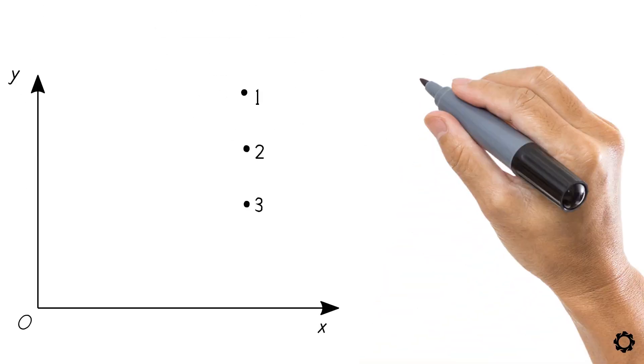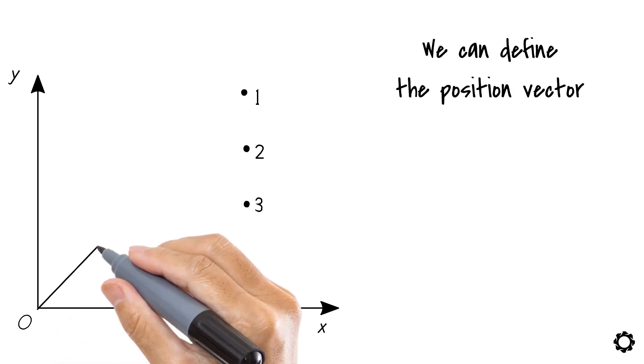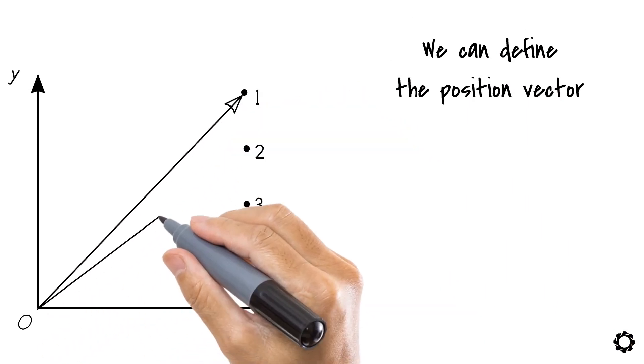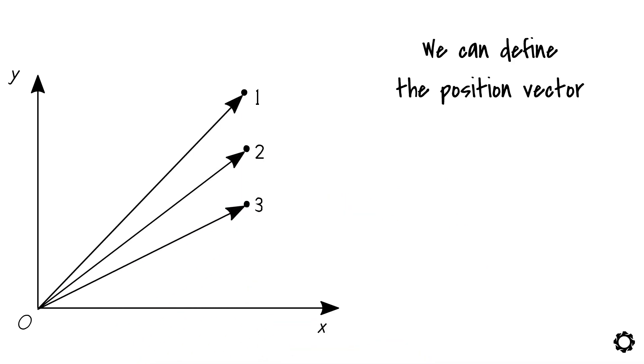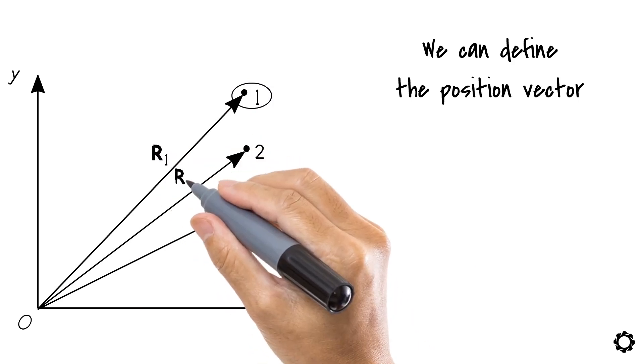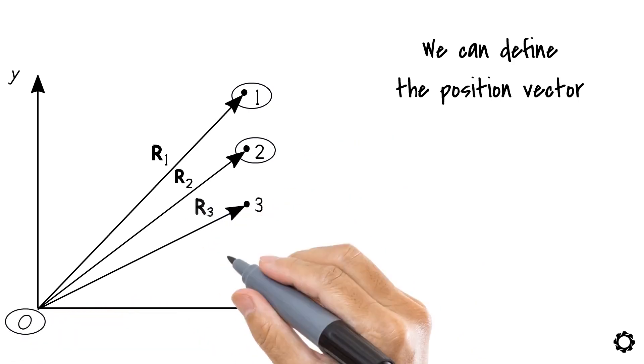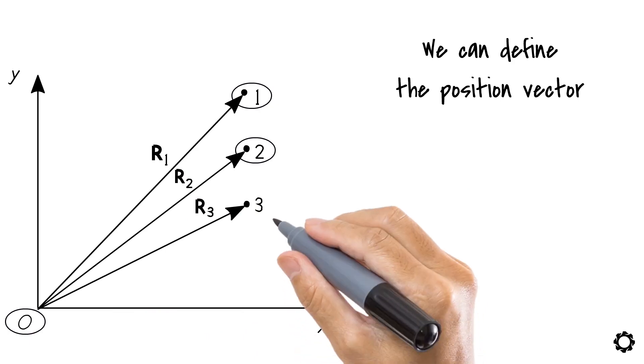If we pick three particles randomly positioned on a plane, we can define the position vector of each one of these particles as the vector that goes from the origin of the fixed or inertial reference system to the particle. That is, for particle 1, this would be the position vector r1. We then have r2, which represents the position vector of particle 2 with respect to the origin of the frame reference system. And finally, r3, representing the position vector of the third particle.